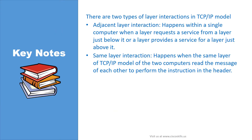Let's sum up our video with the key notes. There are two types of layer interactions in the TCP/IP model. Adjacent layer interaction happens within a single computer when a layer requests a service from a layer just below it, or a layer provides a service for a layer just above it. Same layer interaction happens when the same layer of the TCP/IP model of two computers read each other's messages to perform the instructions defined in the header.